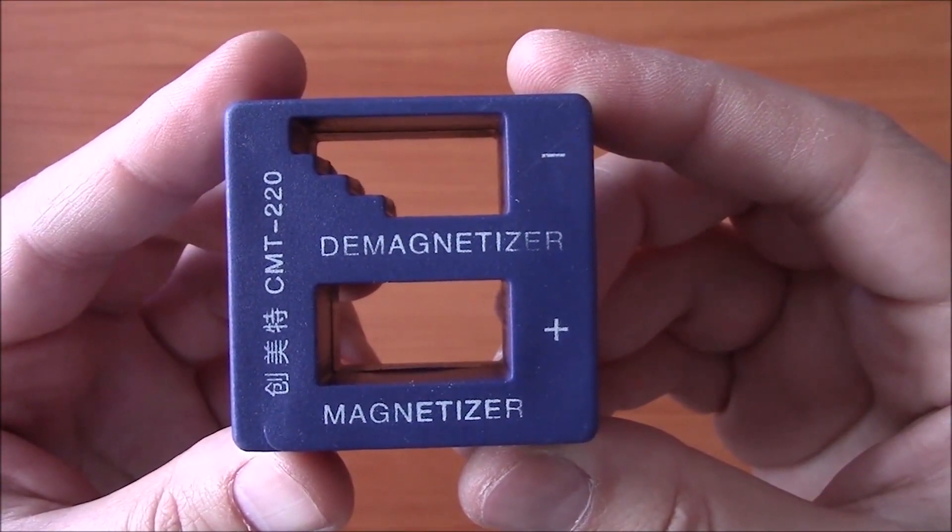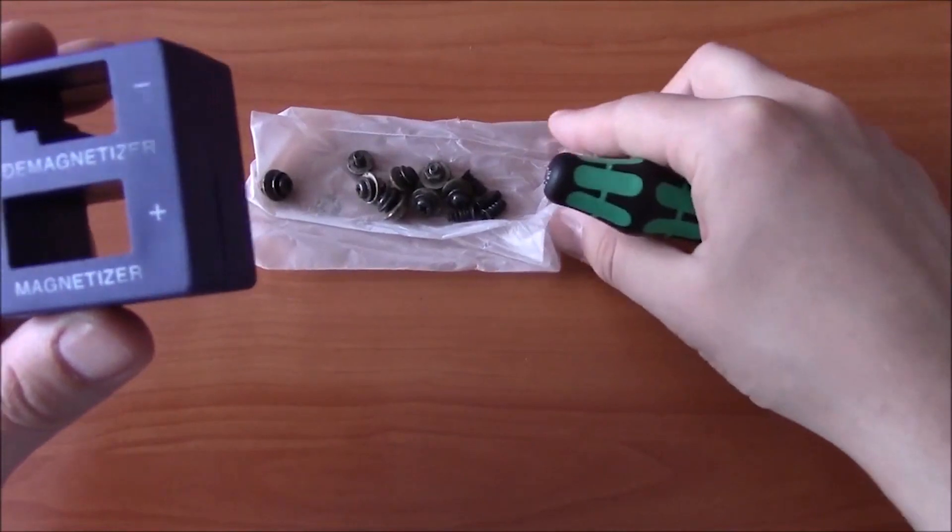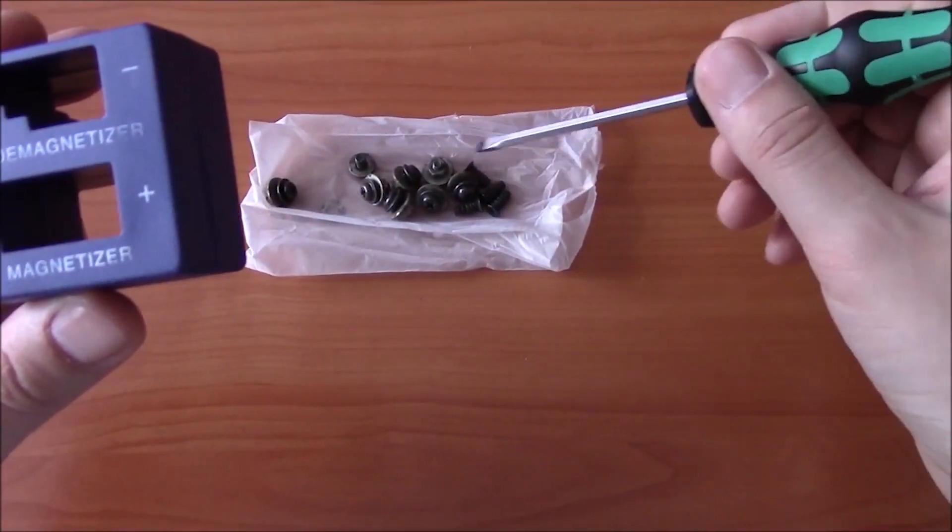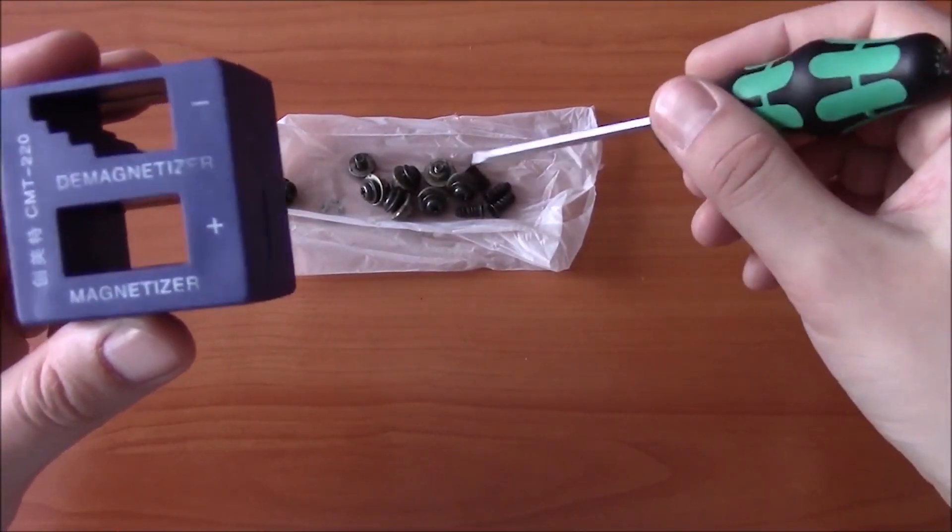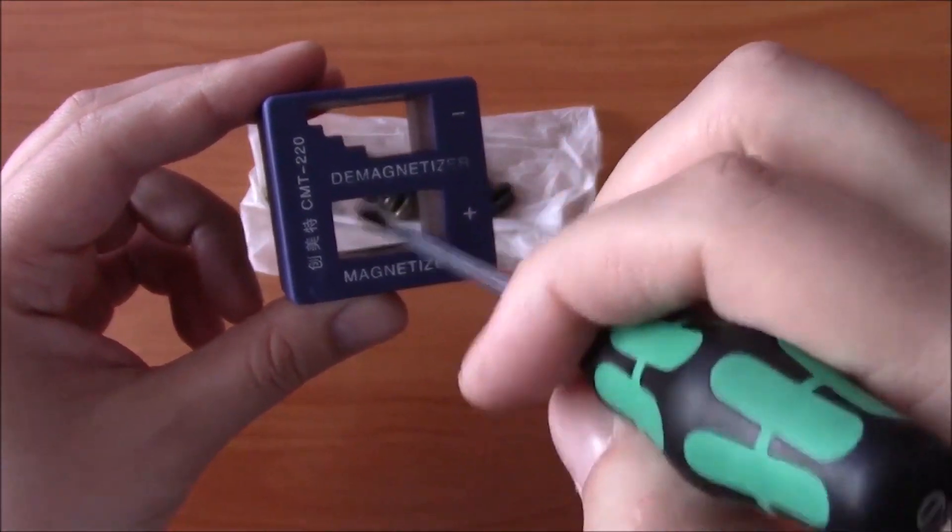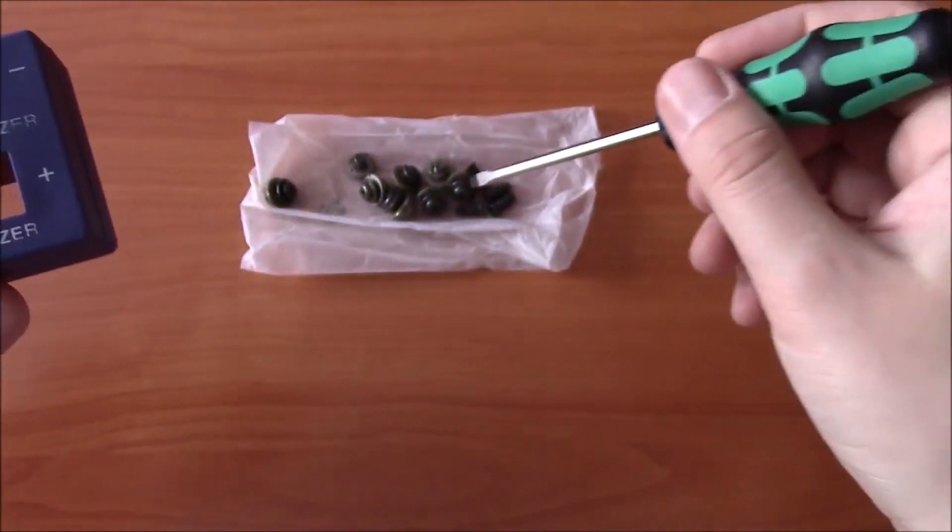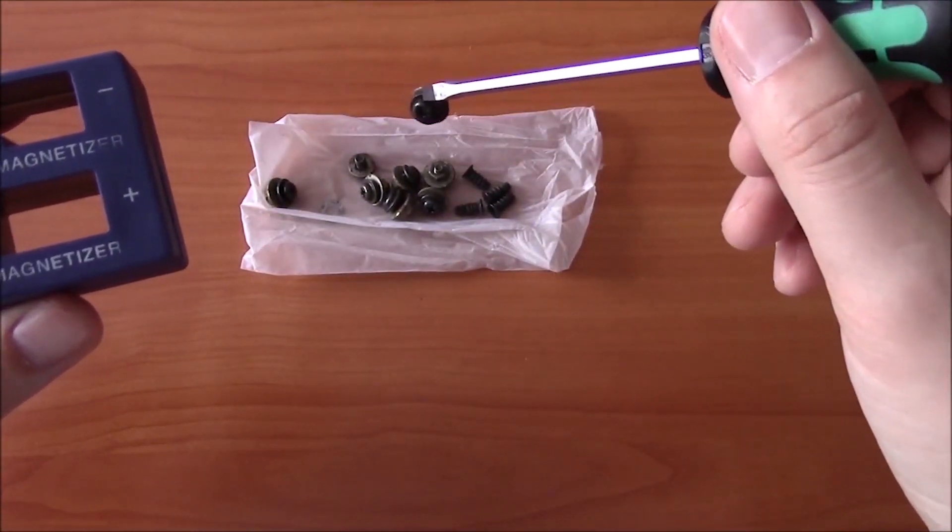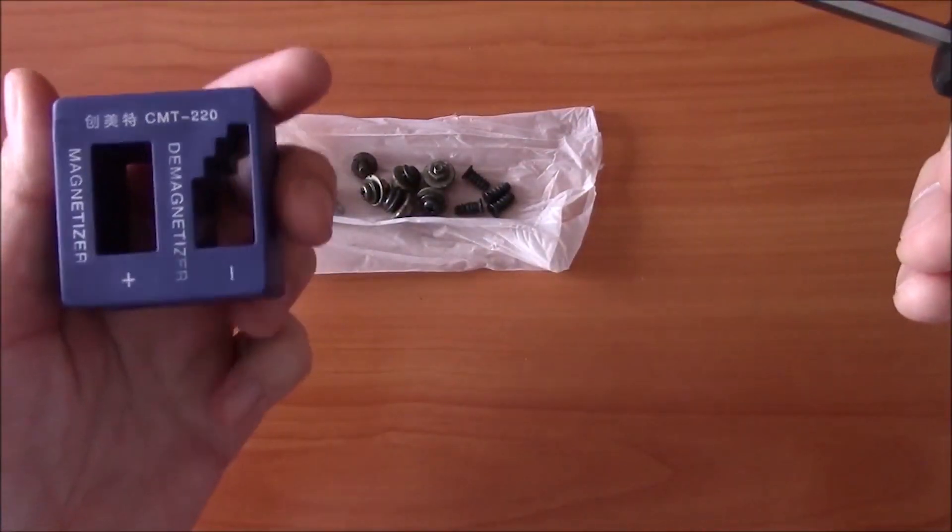This thing can be used for magnetizing and demagnetizing screwdrivers. For example, right now you can see a usual screwdriver which doesn't magnetize anything, but if you put it into the magnetizing hole and make a couple of circles, it will become magnetized and will magnetize iron objects.